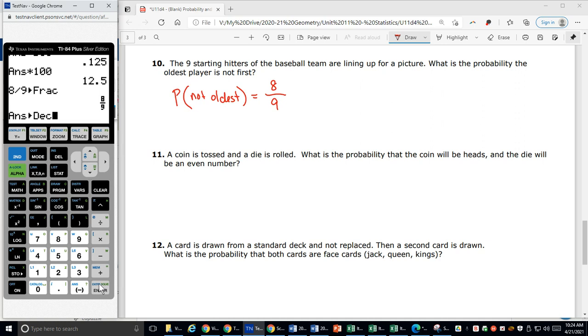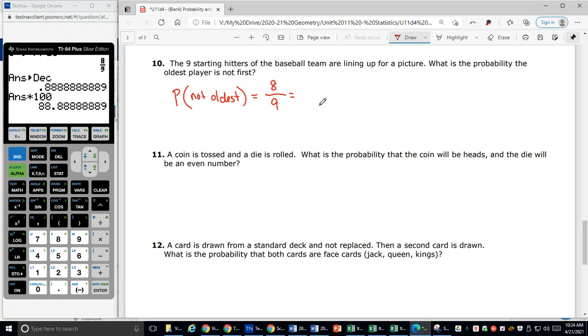Math, make it a decimal. Multiply it by a hundred to make it a percentage. So if they're just randomly lining up for a picture, not trying to make a certain shape or lining up by height or anything, it's totally random. Then we will have 88.9% of the time the oldest player will not be first in line for that picture.